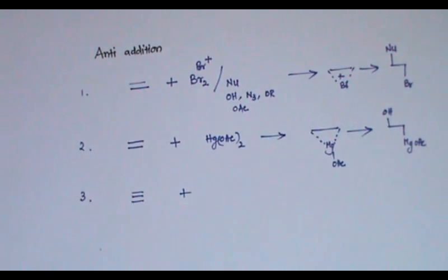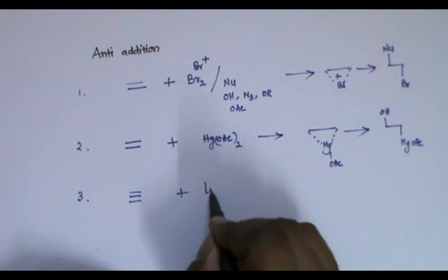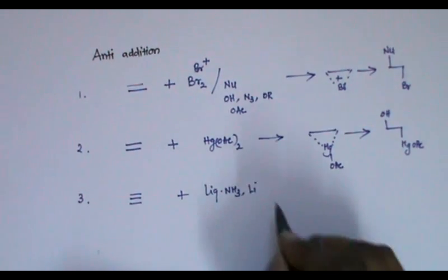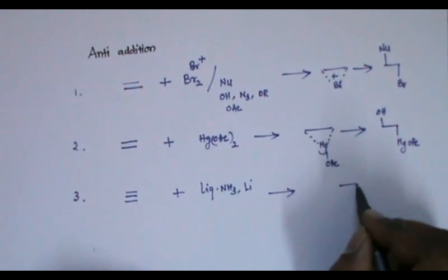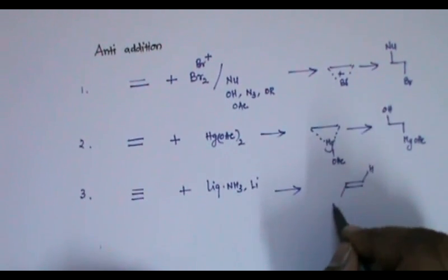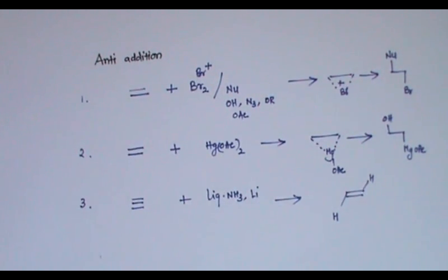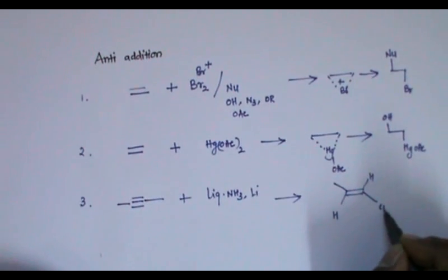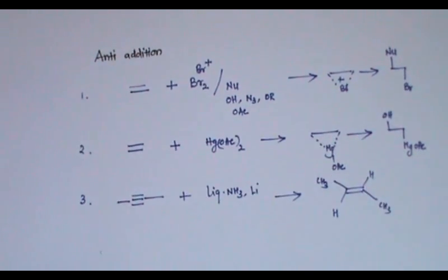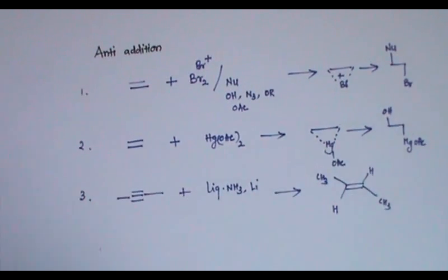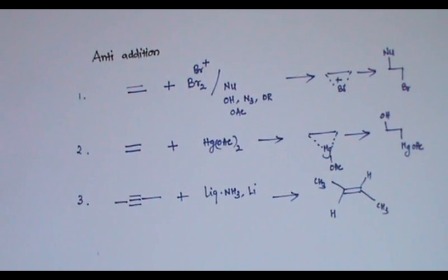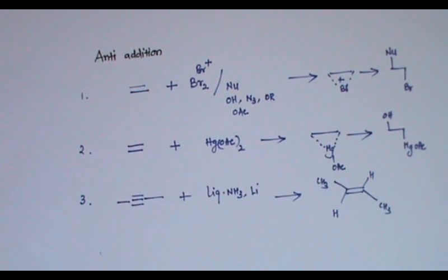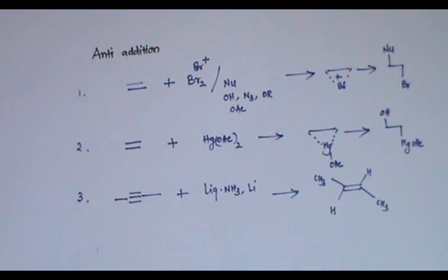The next anti addition is reduction of an alkyne with liquid ammonia and lithium. The product we get has hydrogen added in a trans fashion. For example, with a CH3 group, this hydrogen and that hydrogen are trans to each other — so it is called anti addition, giving the trans alkene product.